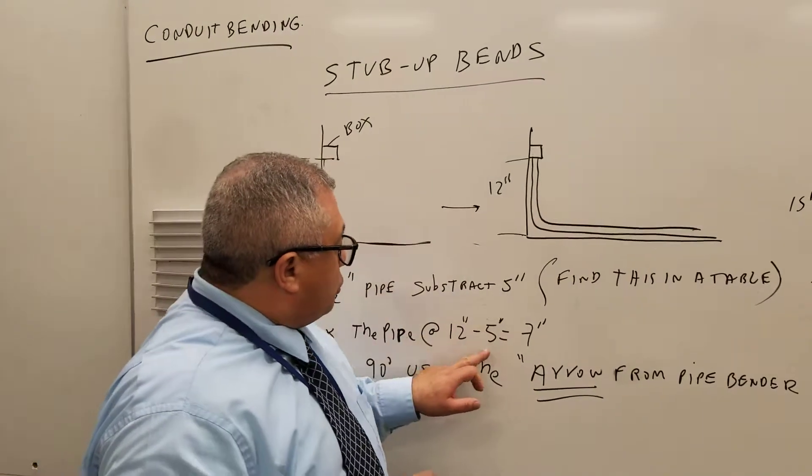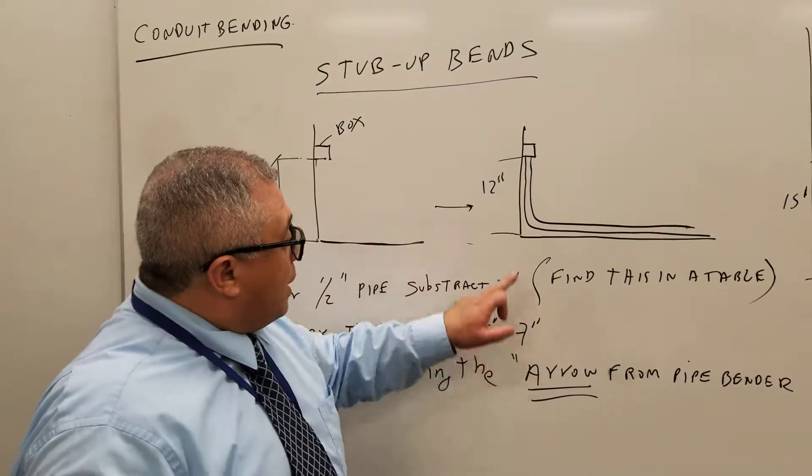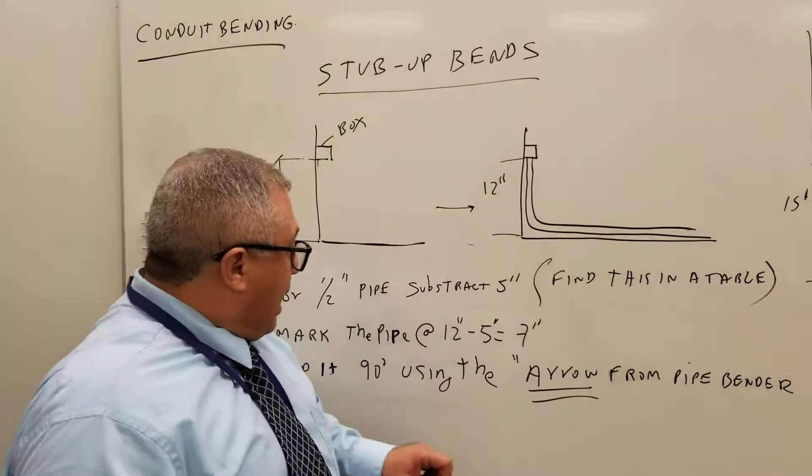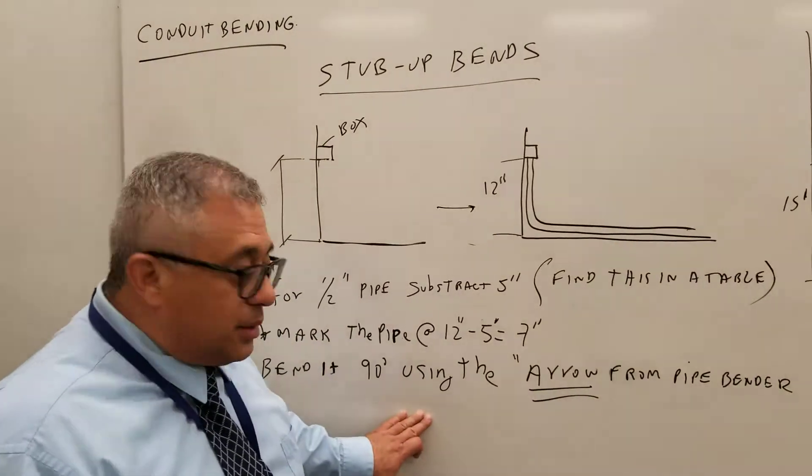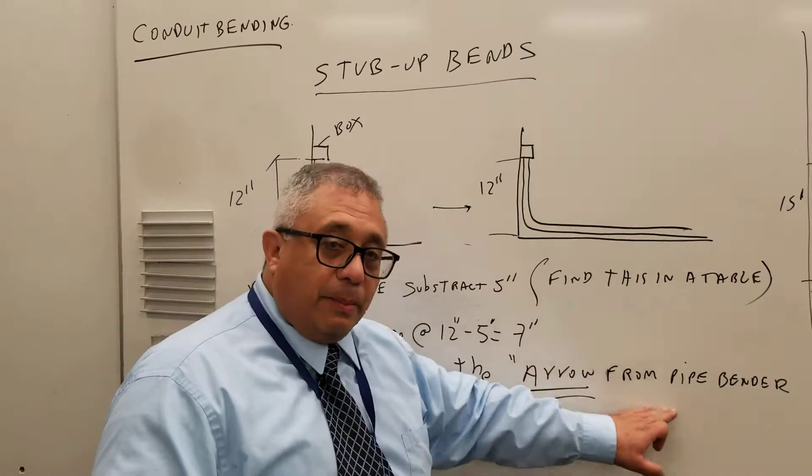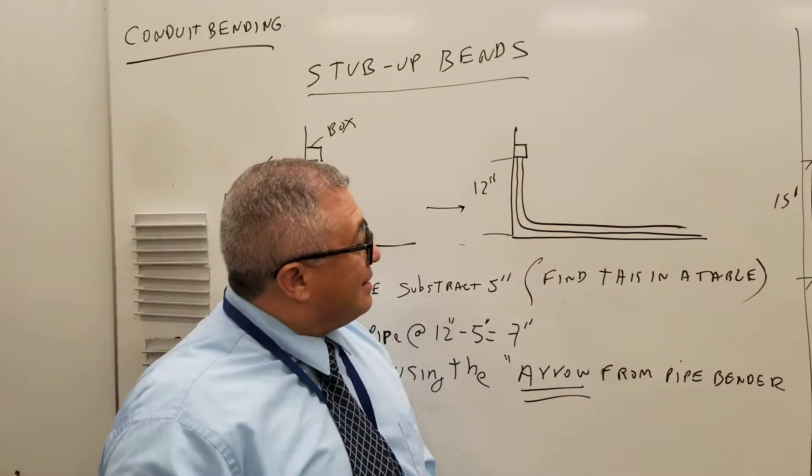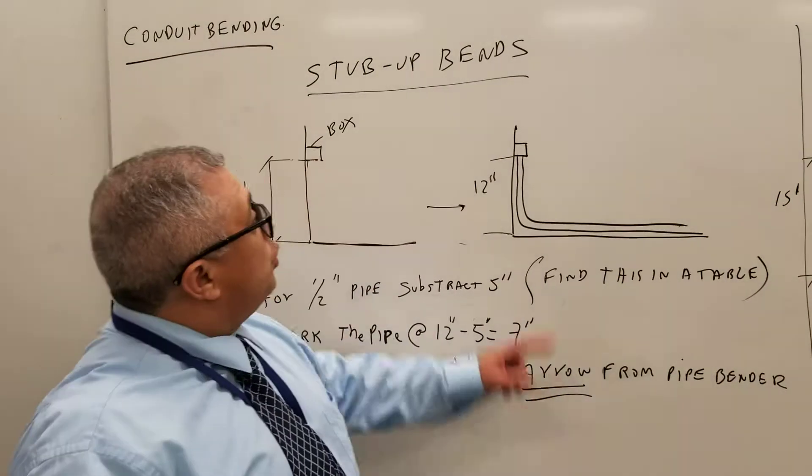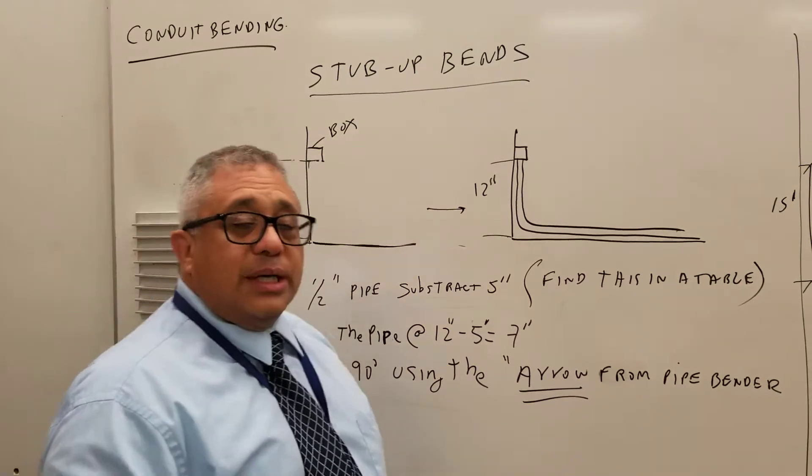Now, once you subtract 5 from 12, you mark the pipe at 7 and you bend it 90 degrees using the arrow from the pipe bender. And this is how easy you do precision stub-up bends.